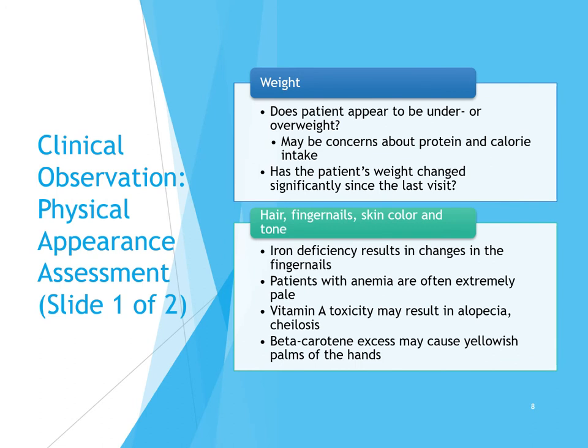For clinical observation, we look at the patient's physical appearance. Is your patient underweight, overweight, or normal weight? While it doesn't tell us everything about their nutritional status, it tells us a lot about their caloric balance. If a patient is terribly underweight, there's a good chance they have a calorie deficit and possibly a protein deficiency as well.